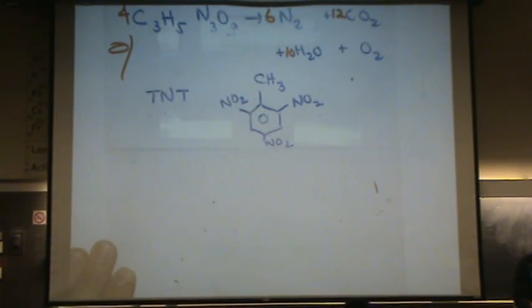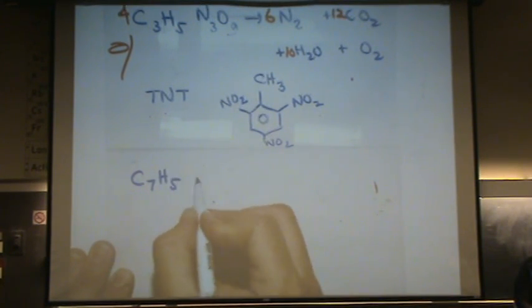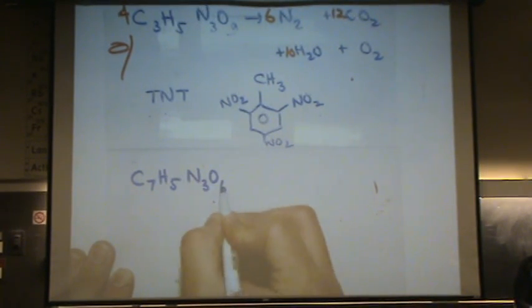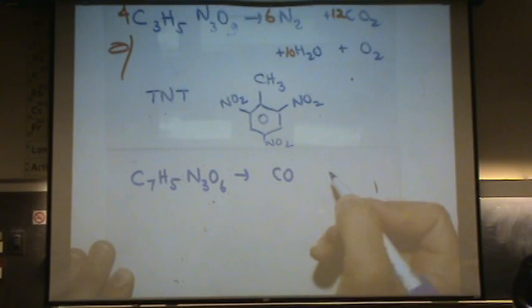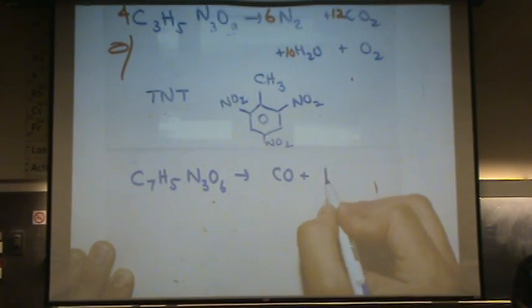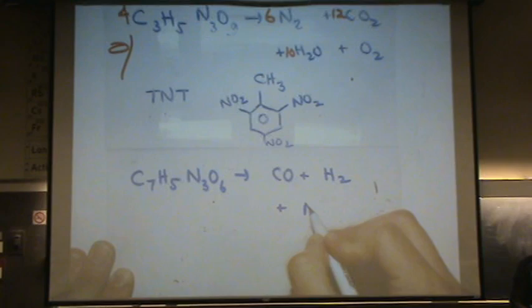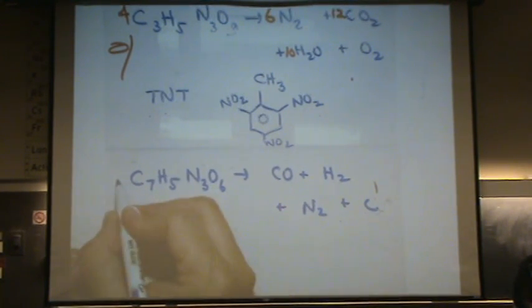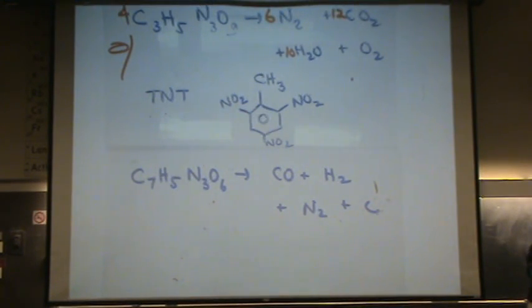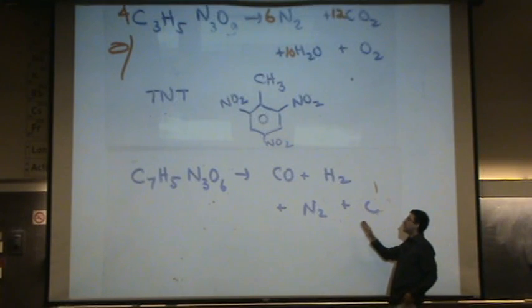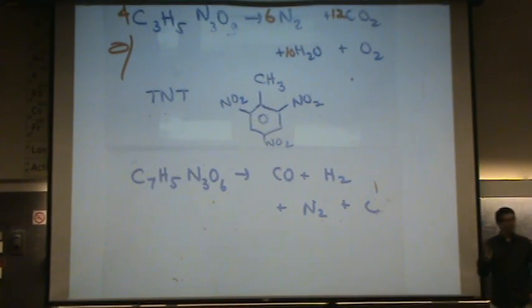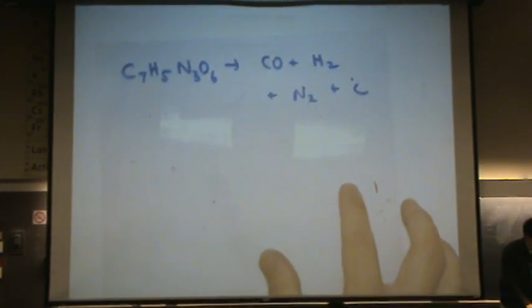When this explodes, it follows this reaction. C7H5N3O6, that reacts to form CO, H2, N2, some carbon, and you can try to balance that as well. But again, notice everything in the products is very stable. And so, there's a big difference between the stability of the reactants and products. Same sort of pattern.